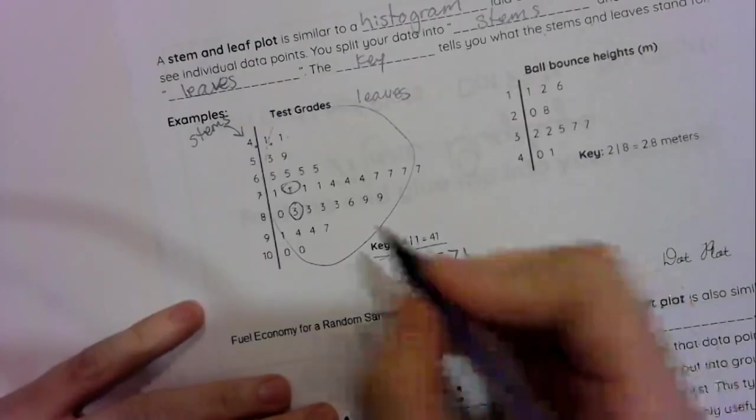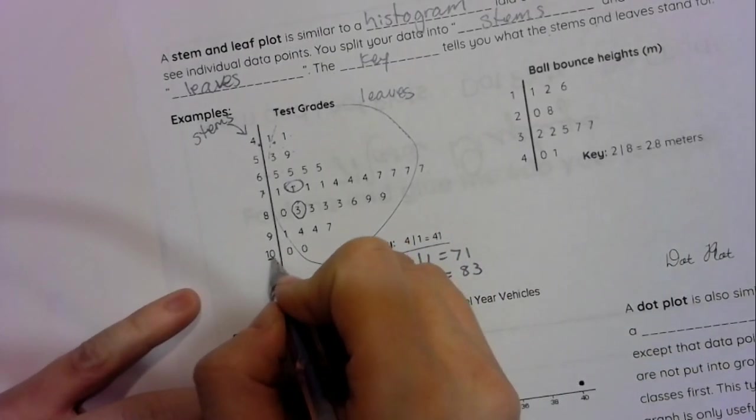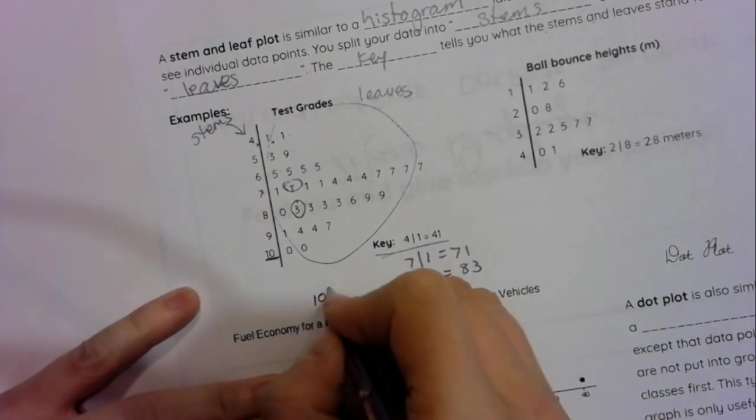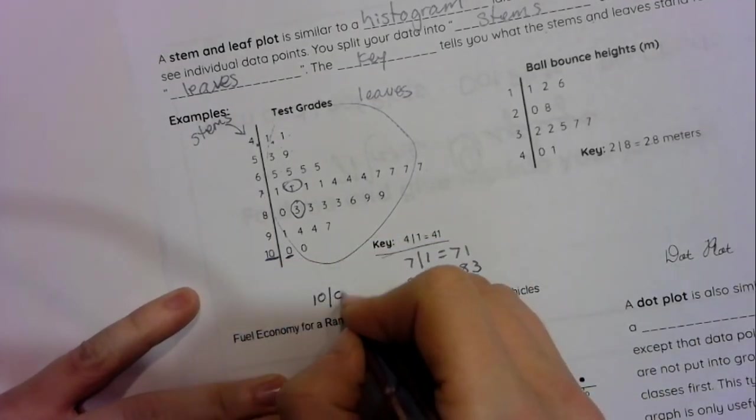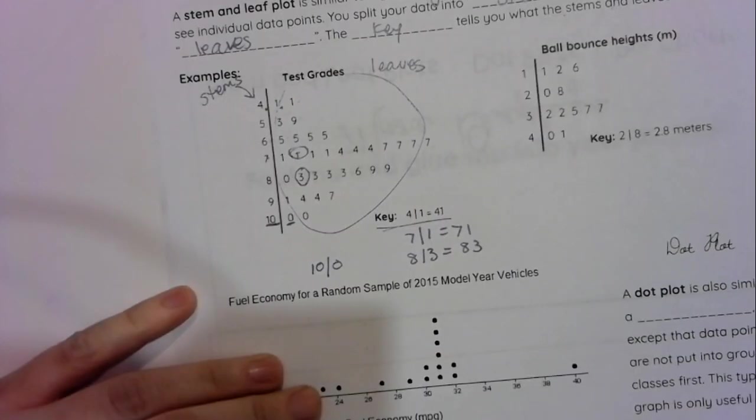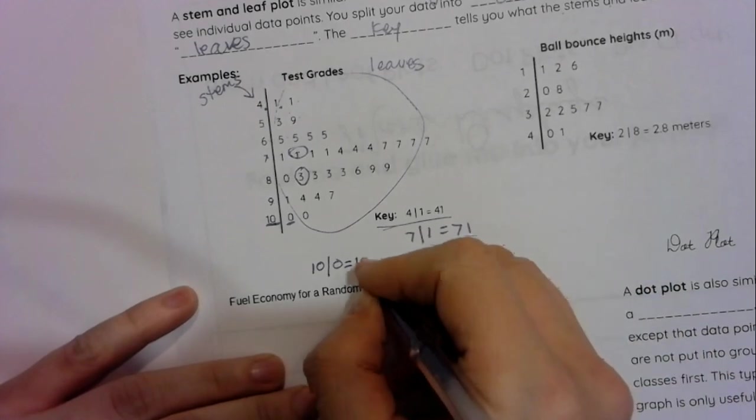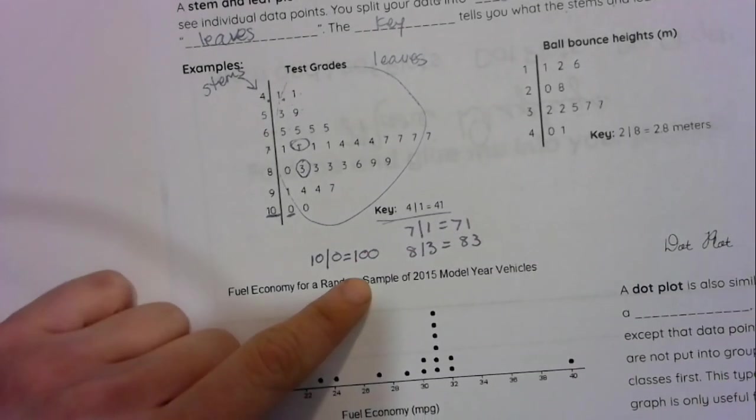Let's see if I can trick you a little bit. What about the stem of 10 and the leaf of zero? What would that be? See if you can figure it out. Well, hopefully you said that would be 100. So that's how you read a stem and leaf plot.